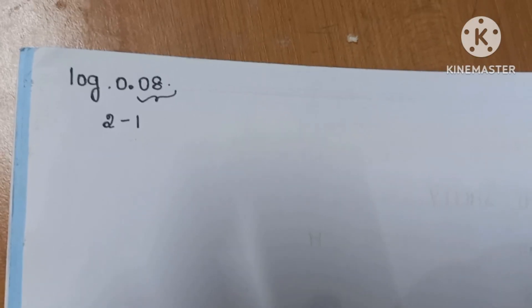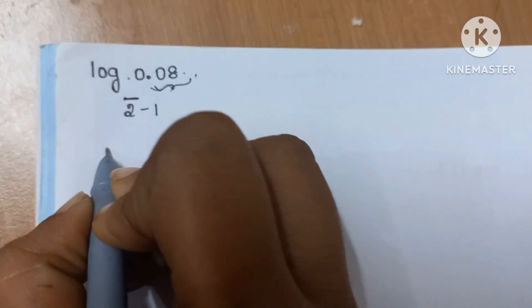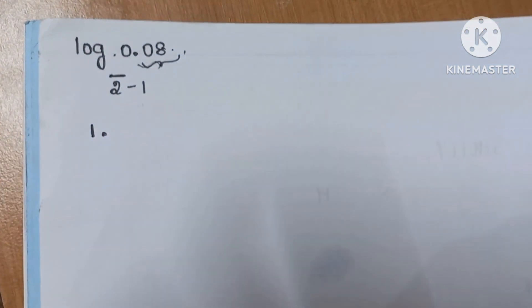Now we will find log 0.08. Here we have 2 digits after the point. So we will do 2 bar minus 1, that is 1 point.